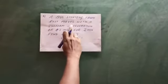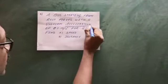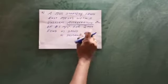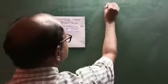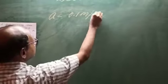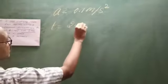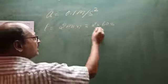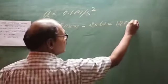Now let us go to the fifth problem. A bus starting from rest moves with uniform acceleration. A is given as 0.1 meters per second squared for two minutes. So the two things given here are acceleration of 0.1 meters per second squared and time equal to 2 minutes, which is 2 into 60, equal to 120 seconds.